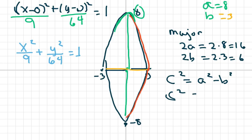So c squared, we're finding c. c equals 64 minus 9. So c squared equals 55.